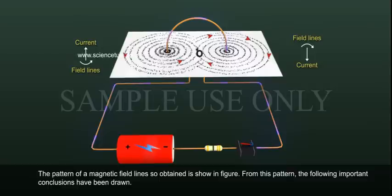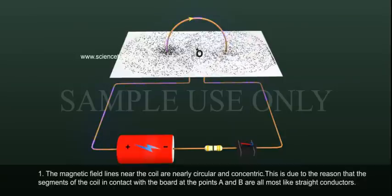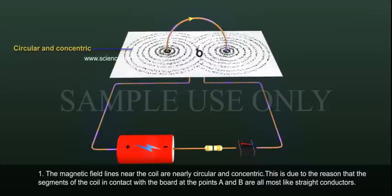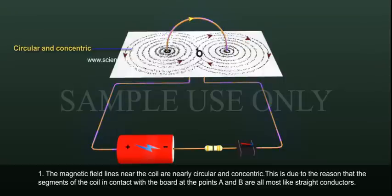From this pattern, the following important conclusions have been drawn. The magnetic field lines near the coil are nearly circular and concentric. This is due to the reason that the segments of the coil in contact with the board at points A and B are almost like straight conductors.